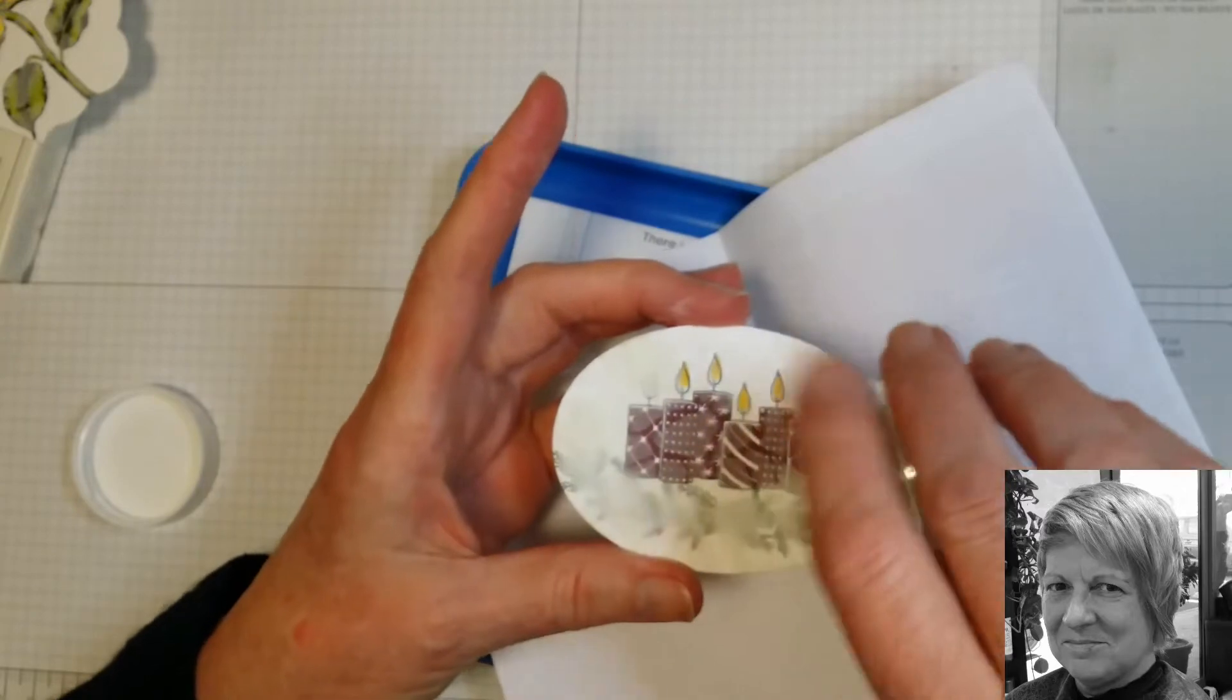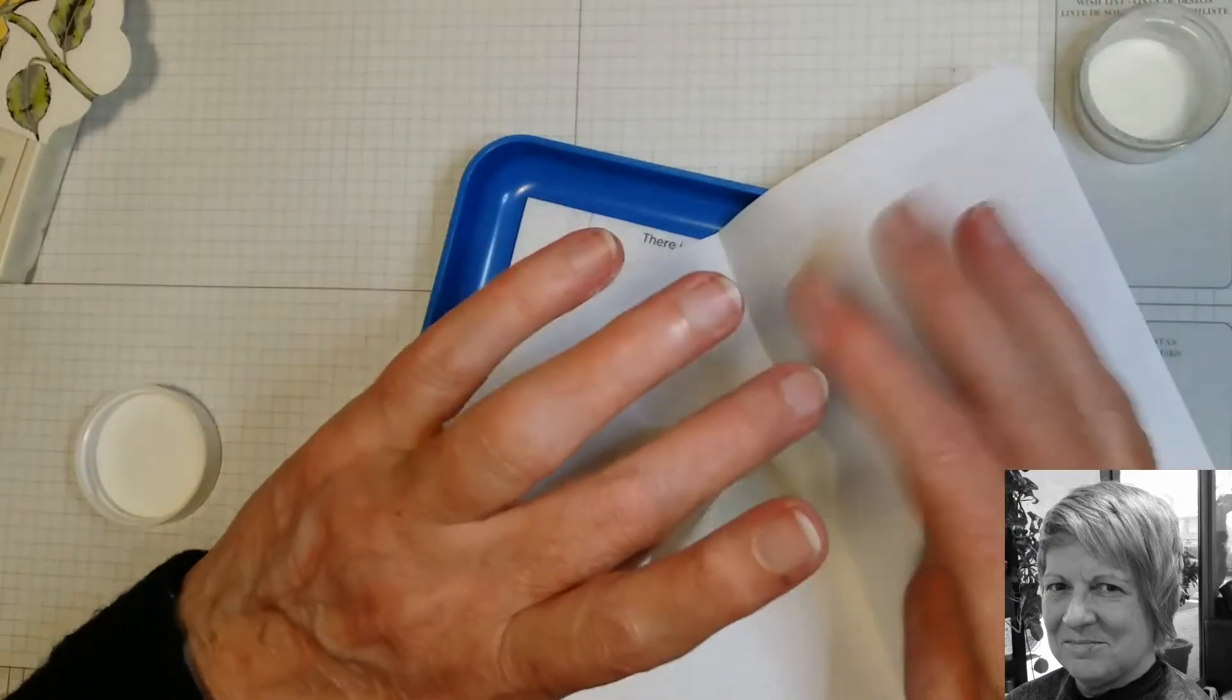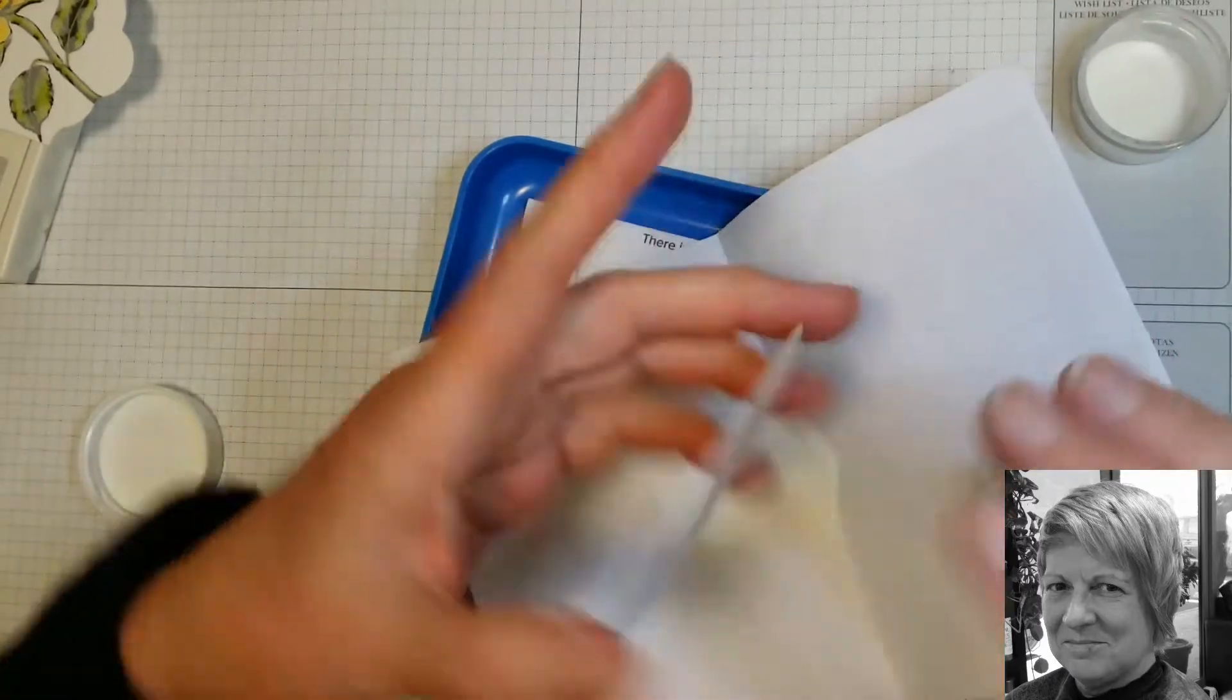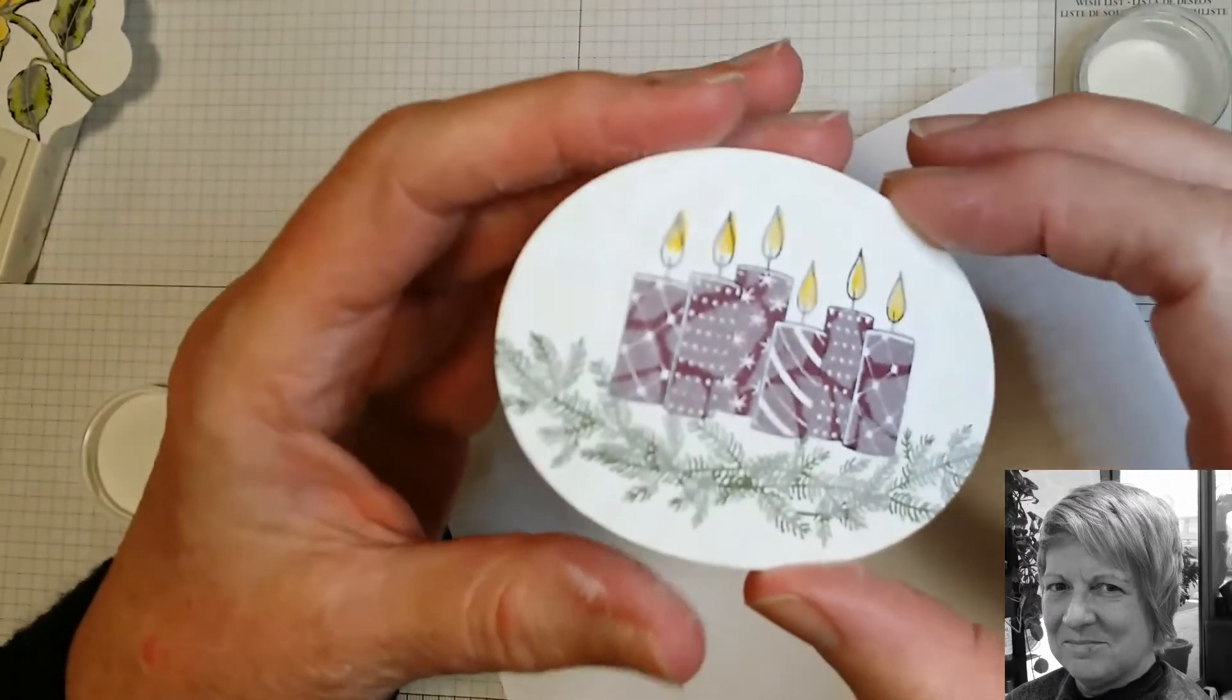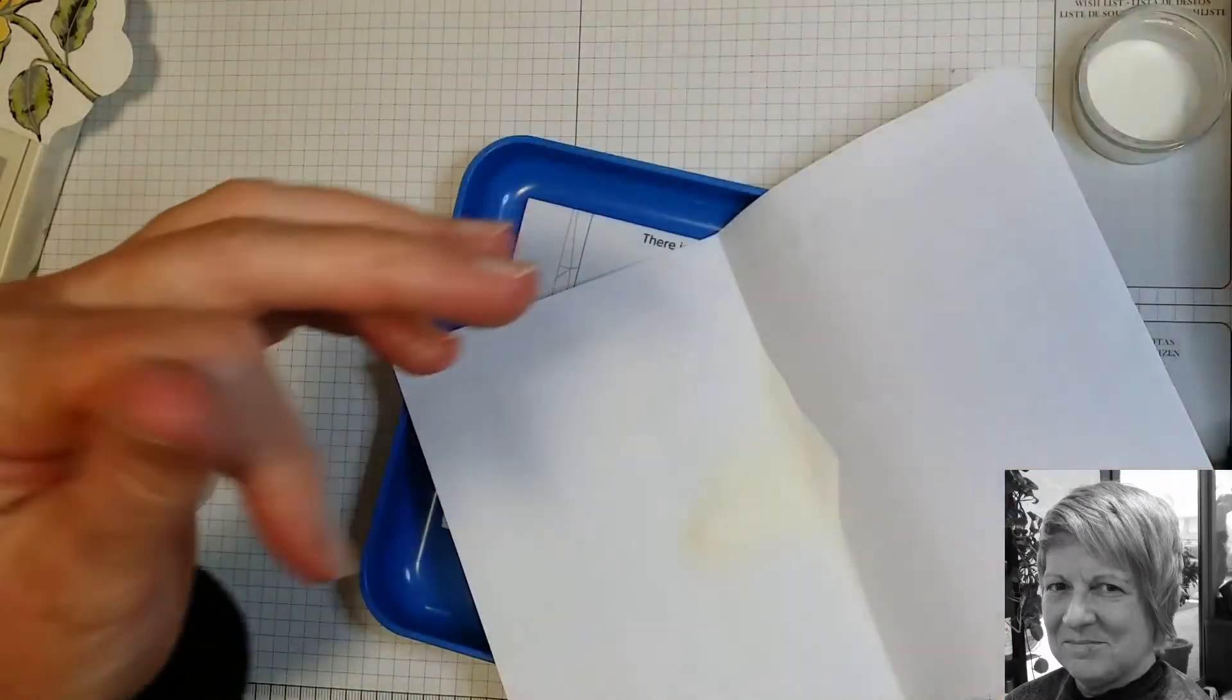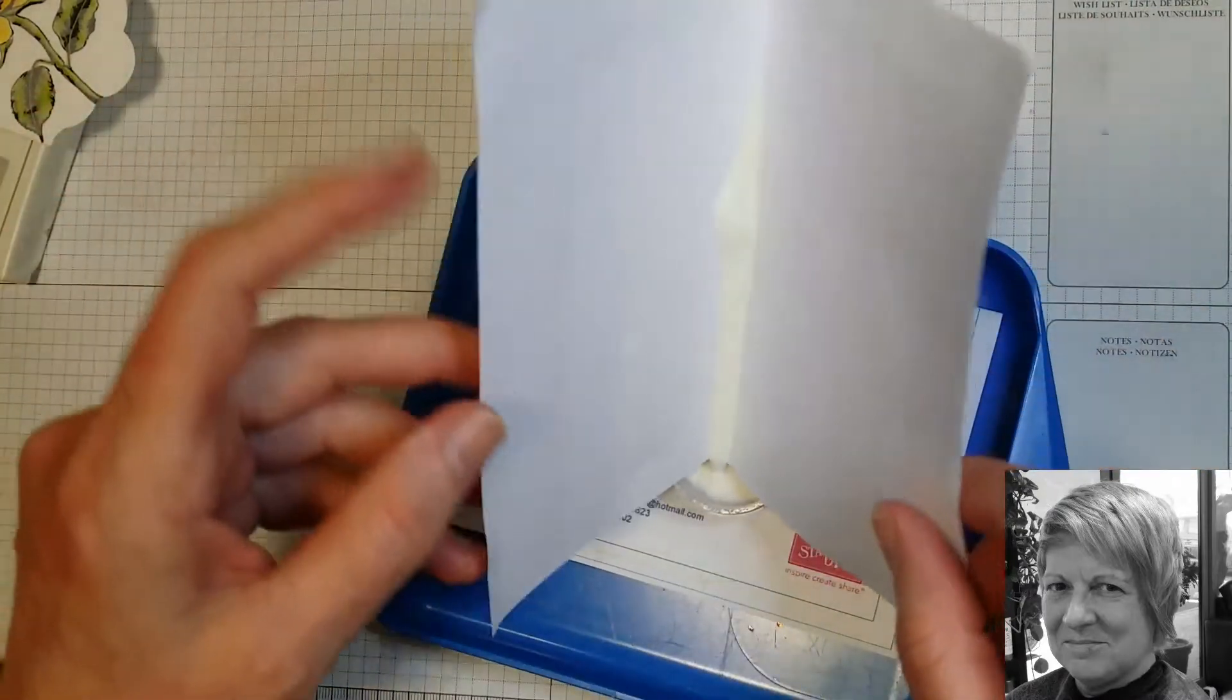You can probably see a little bit more on this one because of the dark colors in the candles. You'll see the embossing powder on there. Get rid of our excess.